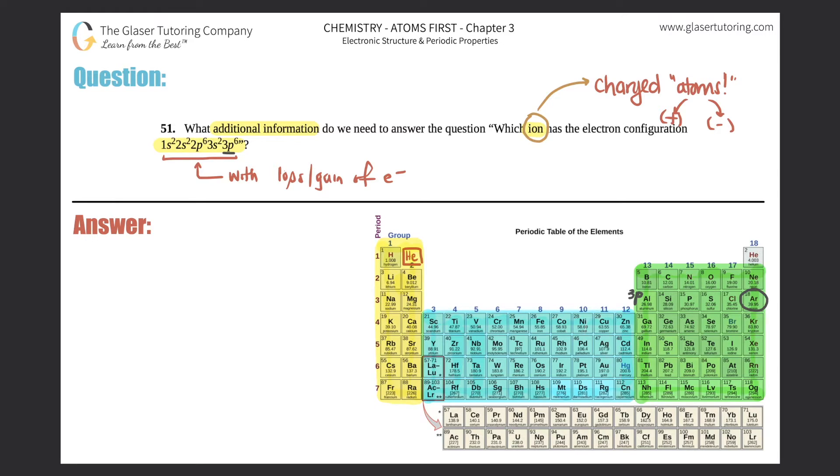But now who is it, right? It could have been chlorine who gained an electron to bump it to argon. It could have been sulfur that gained two electrons, one, two, to get to argon. Could have been phosphorus who gained three, or it even could have been potassium who lost one—19 goes down to 18.